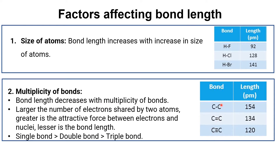The second factor is bond multiplicity — whether it is a single, double, or triple bond. For a single bond, 2 electrons are shared; for a double bond, 4; for a triple bond, 6. As shared electrons increase, the attractive force between electrons and nuclei increases. More attraction means atoms are pulled closer together, so bond length decreases as we move from single bond to triple bond.